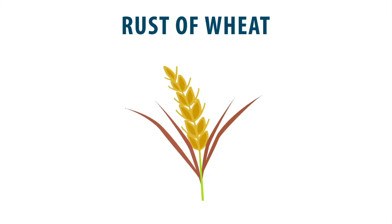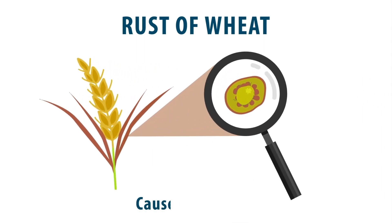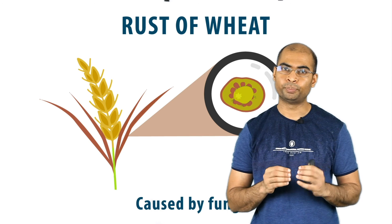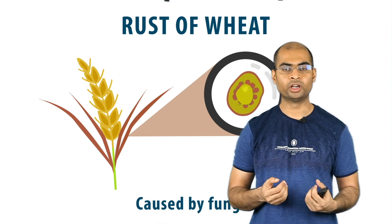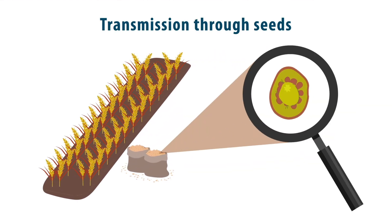The next disease is rust of wheat. Like the name suggests, it results in rust-like veins on the leaves of wheat plants. This is caused by a fungus that starts covering the leaves with its pores, which inhibits the process of photosynthesis and leads to a smaller yield. These pores can then spread through the wind, thereby infecting other plants. They can also enter the seeds and thus pass on the disease to the next generation.